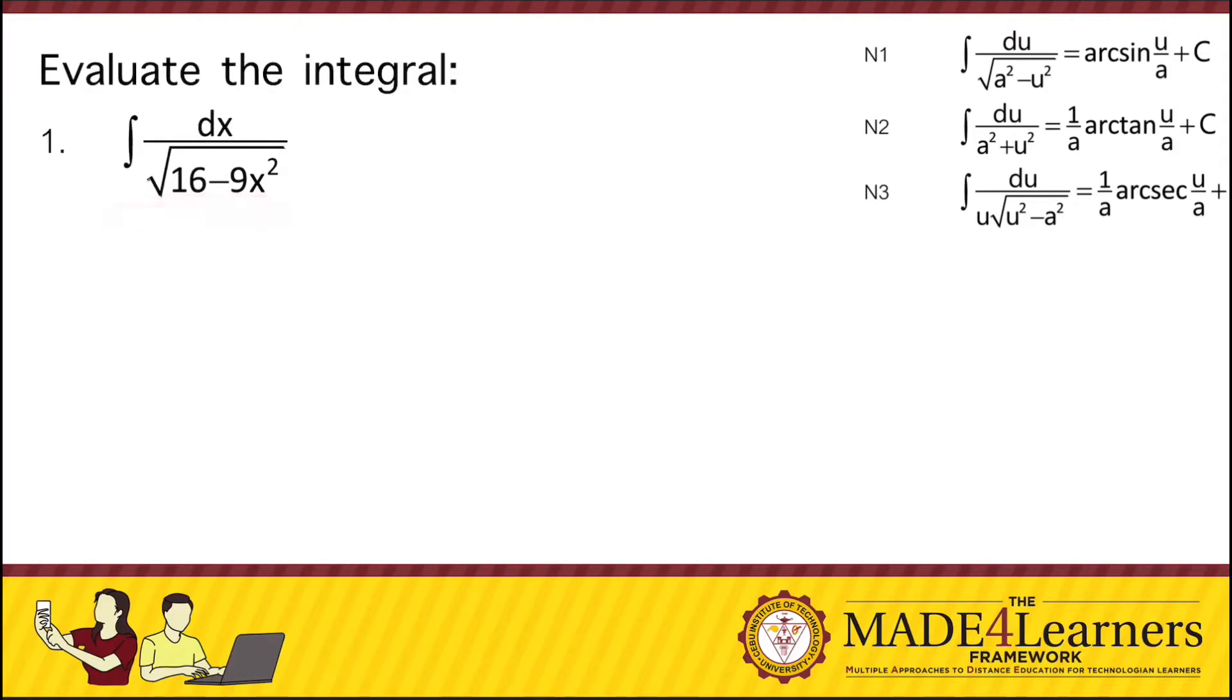So we check which among these three formulas on the right it follows. Obviously, the pattern that it follows would be that for n1, we are in a squared is equal to 16, so that a is equal to 4.